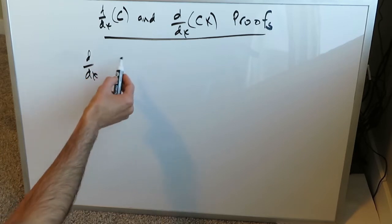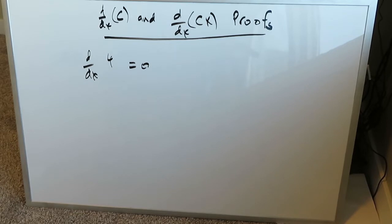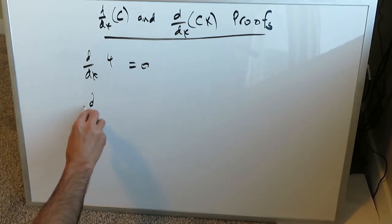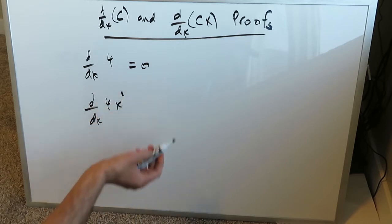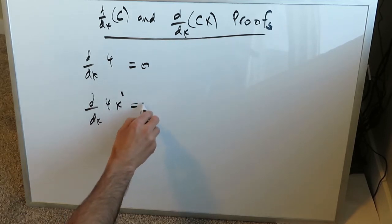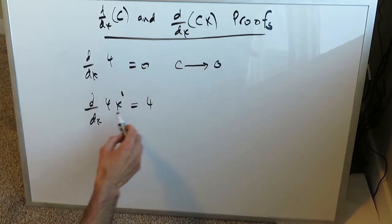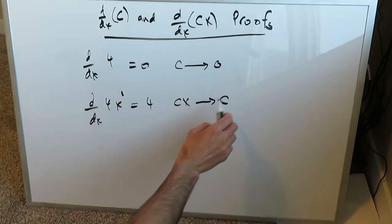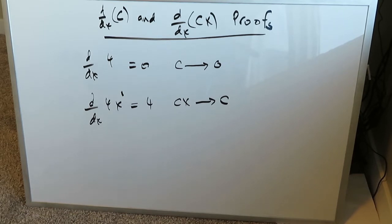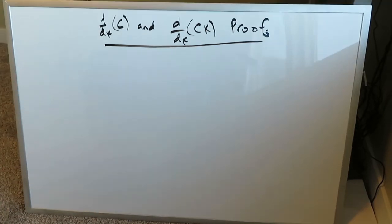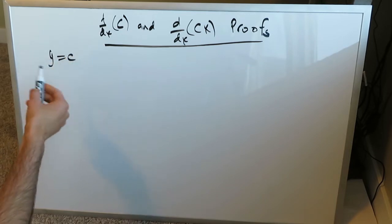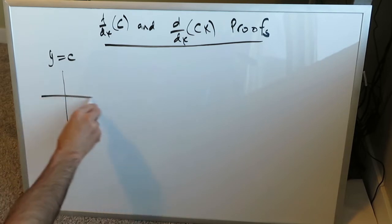The first case: the derivative of a constant like four is zero — we want to understand why. The second case: the derivative of d/dx of four-x, where x has an exponent of one, is four — we want to understand why. When you take the derivative of a constant, it becomes zero. For something like c times x, when you take the derivative, you retain the constant and lose the variable. In this video we'll look at proofs using the basic definition of the derivative.